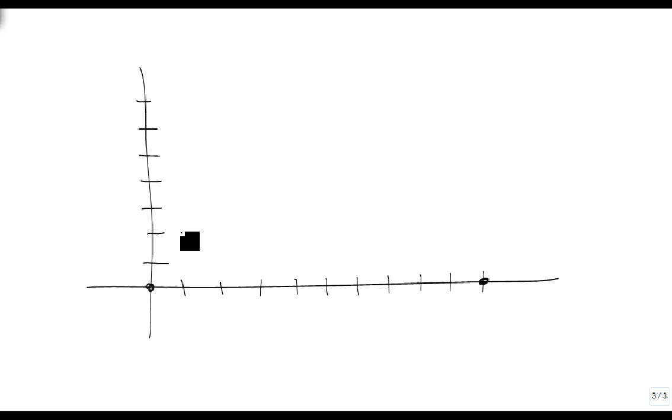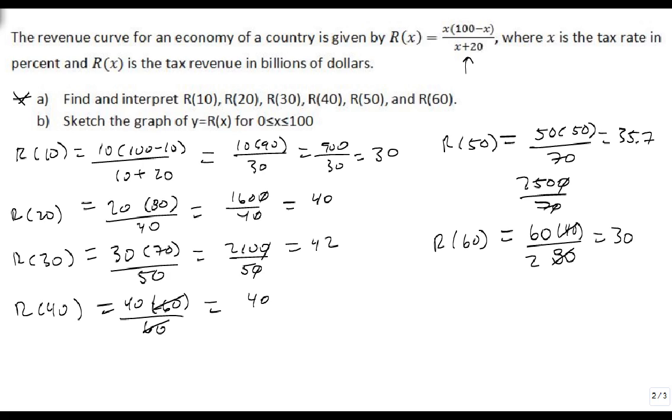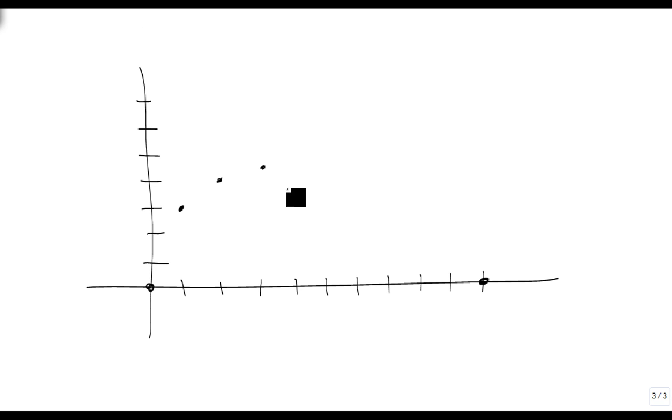That should be enough, because 10 was 30, 20 was 40, 30 was about 42, 40 came back at 40 as well, 50 was at about 35, and 60 was 30. So we got a graph that did this and then comes back down to there. So there's our sketch of our graph, something that looks roughly like that.